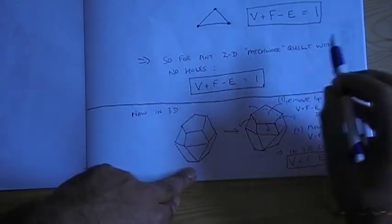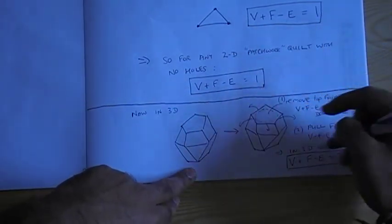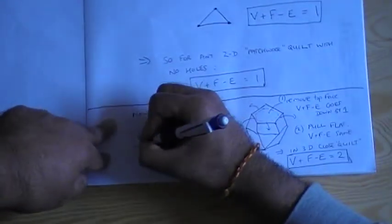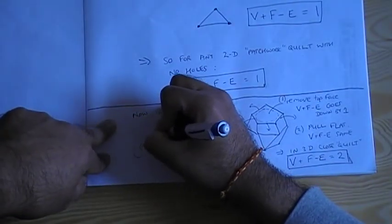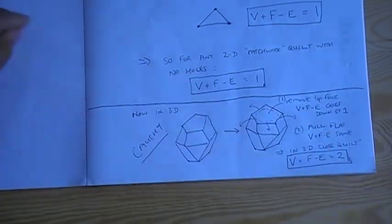And it's a remarkably clever argument. And this argument, although this characteristic is named after Euler, the person who came up with these arguments is a guy called Cauchy, who is another very famous mathematician.